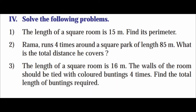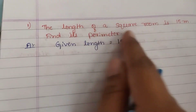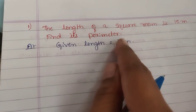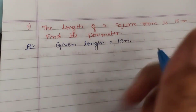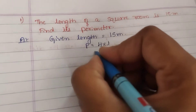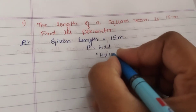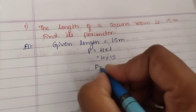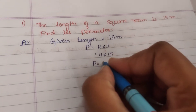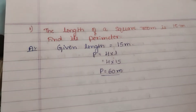Let's see the 4th and last main of this exercise — solve the following problems. First question: the length of a square room is 15 meters, find its perimeter. Given: length is equal to 15 meters. Perimeter is equal to 4 into length, that is 4 into 15, which equals 60 meters.